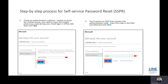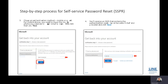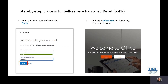Choose an authentication method. If you have set up the options mentioned earlier — for example, if you select text to my mobile phone — enter your mobile phone number and click Text. You will receive an SMS containing the authentication code; key in the code in the field provided and click Next. After that, enter a new password and confirm the new password. This will now be your new password for your Office 365 account.